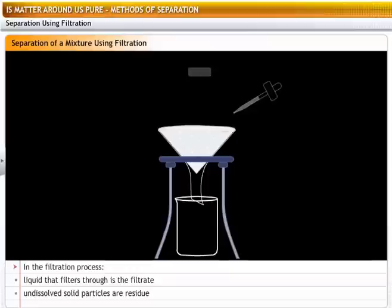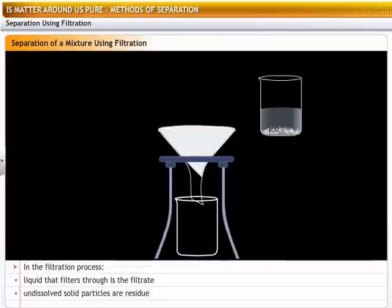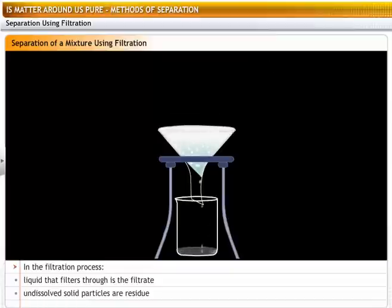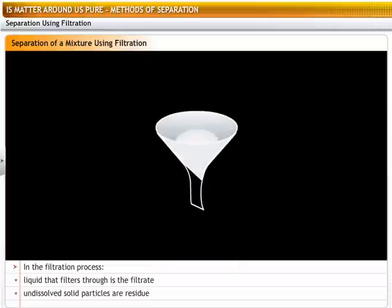Fix the filter paper to the funnel using a few drops of water. Now pour out the mixture slowly with the help of a glass rod. The filtrate collects in the beaker and the residue is left behind on the filter paper.